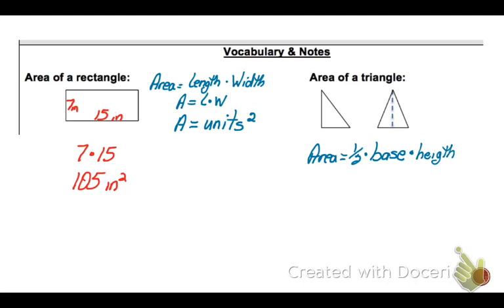Remember, it is units squared. Now, for the area of a triangle, it is one half times the base times the height, and this is the formula written as one half BH.